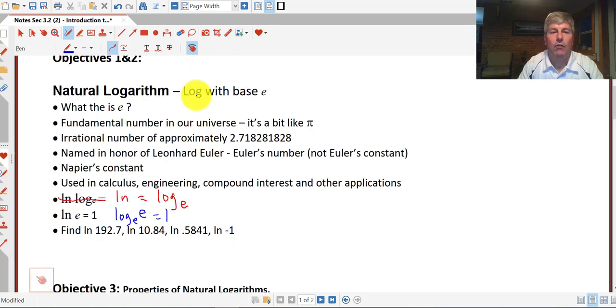The natural logarithm is log with a base of e. Remember that e is that fundamental number in our universe, like pi, it's that irrational number. The natural log is really log base e. When you see natural log, you've got to think log with a base of e, not log base 10 or log base 2, but log base e.